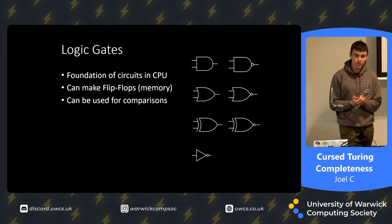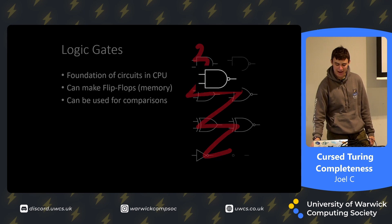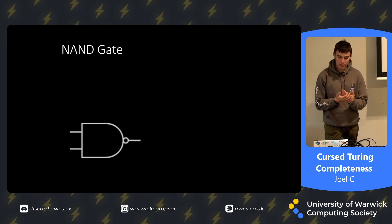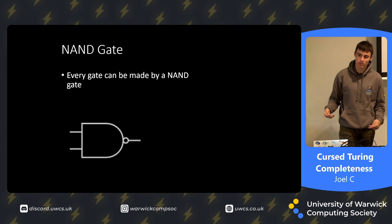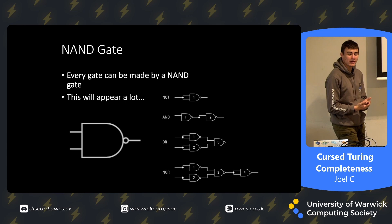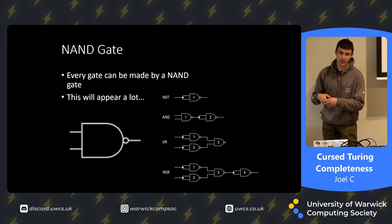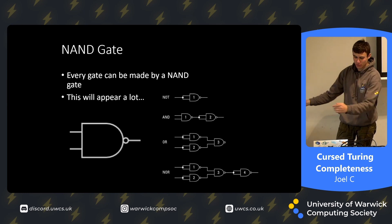Their logic gates — you've got AND, NOT, and OR — these are just comparisons. As some of you may know from an architecture course, most of these are actually irrelevant. We only really need the NAND gate, because every gate can be made up using a NAND gate. We can make a NOT gate by piping a NAND gate into itself, and an AND gate by piping two together. This appears a lot in Turing completeness proofs: prove you can simulate a NAND gate, and therefore it's Turing complete.